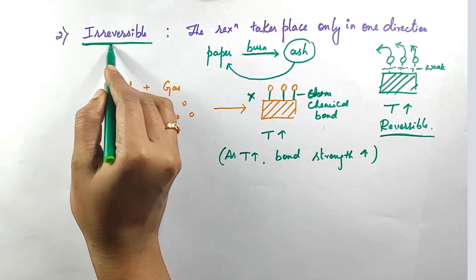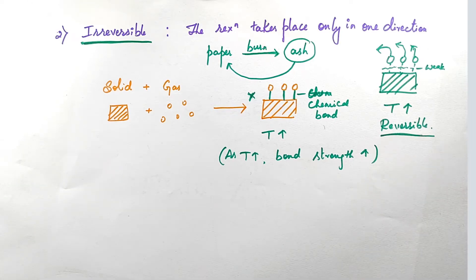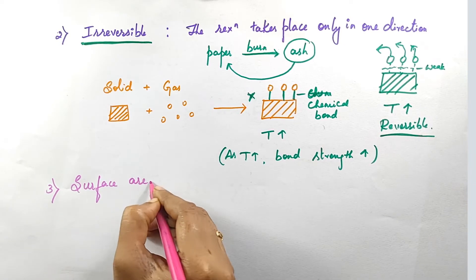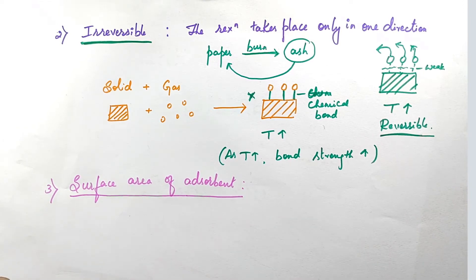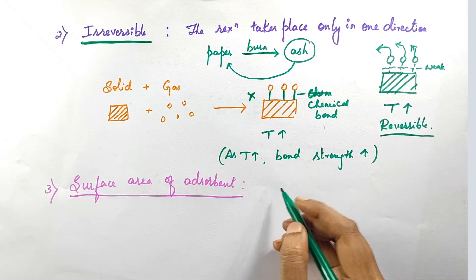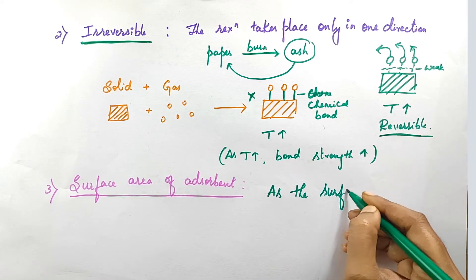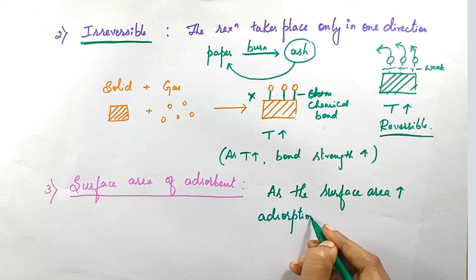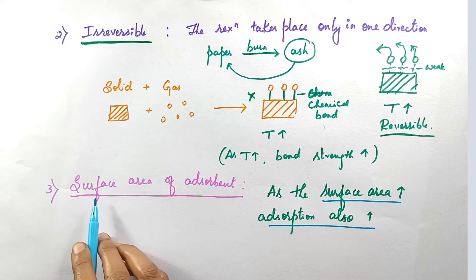So chemisorption is called irreversible in nature. This is the second characteristic of chemisorption. Next, the third characteristic is surface area of the adsorbent. As the surface area increases, adsorption also increases. So this is the third characteristic of chemisorption.